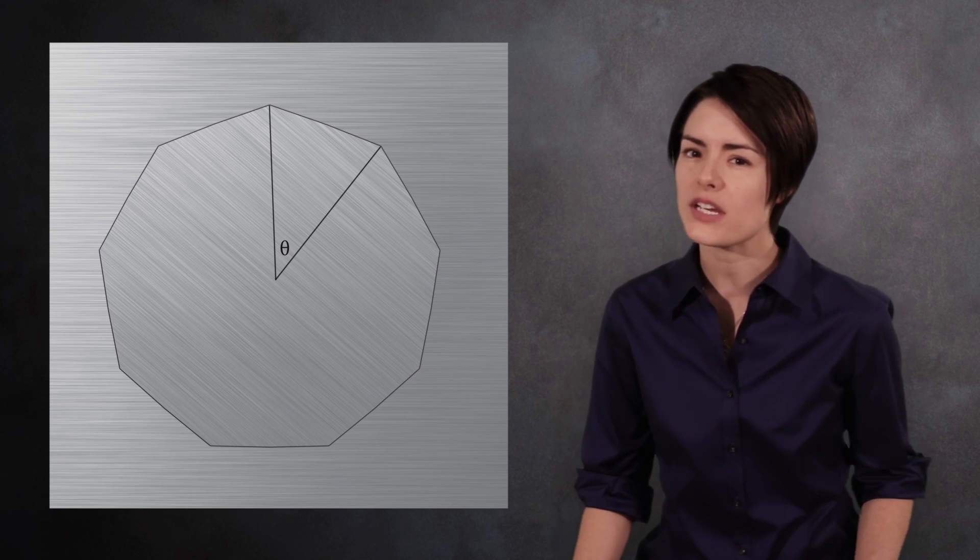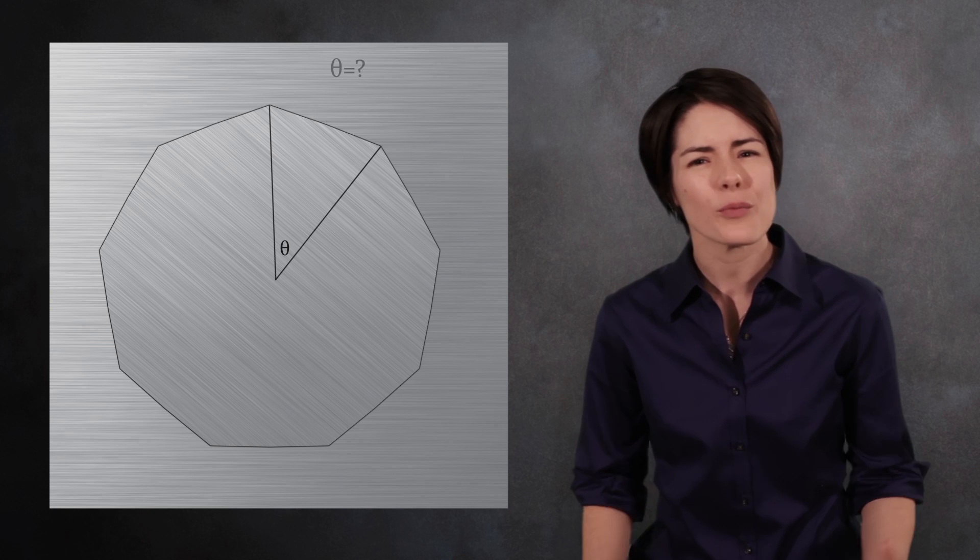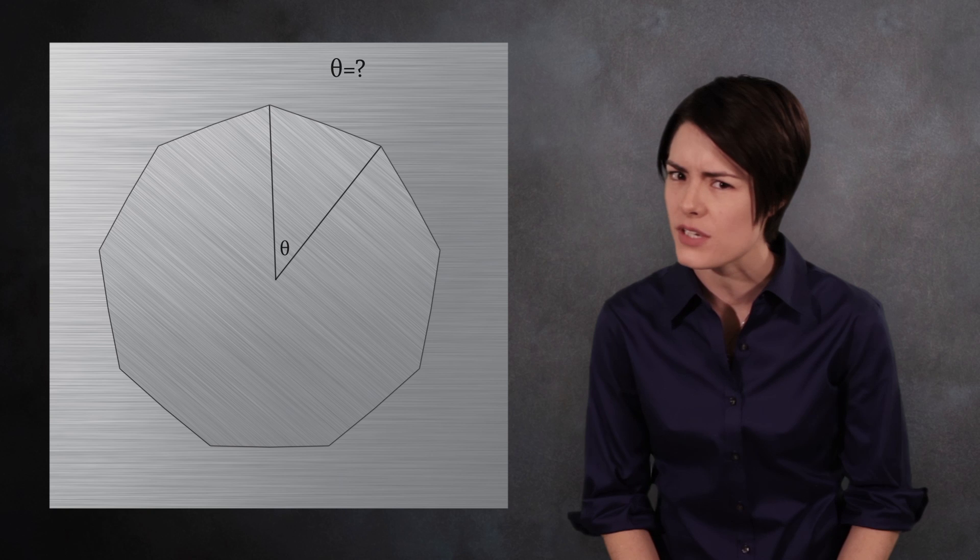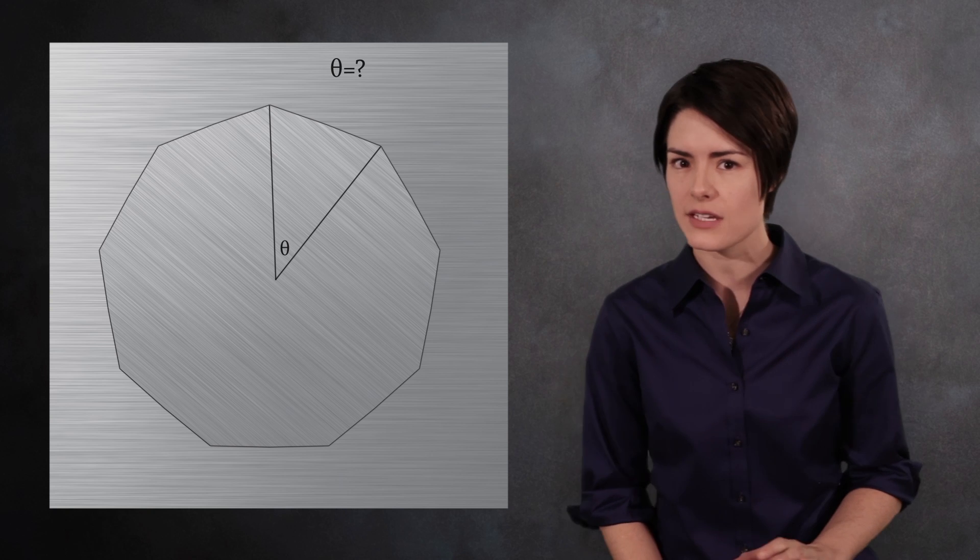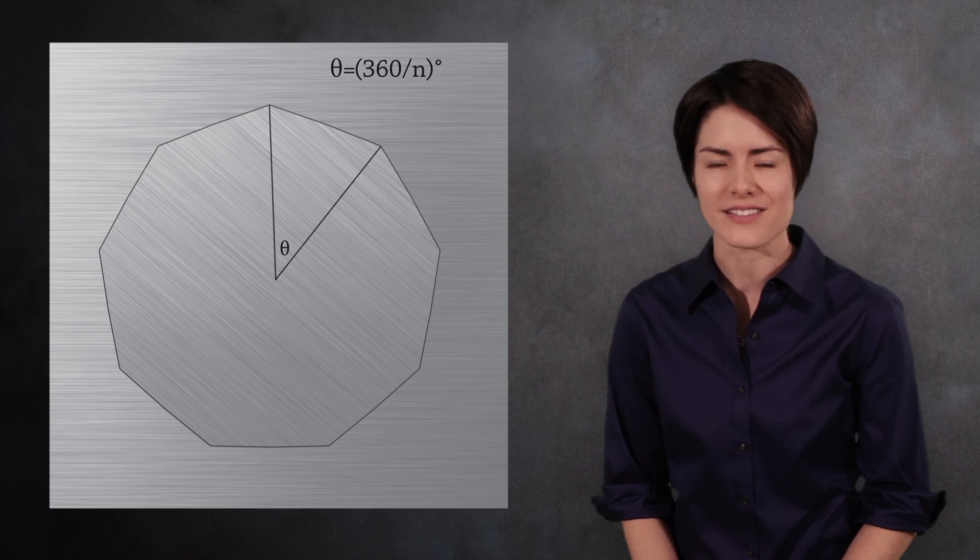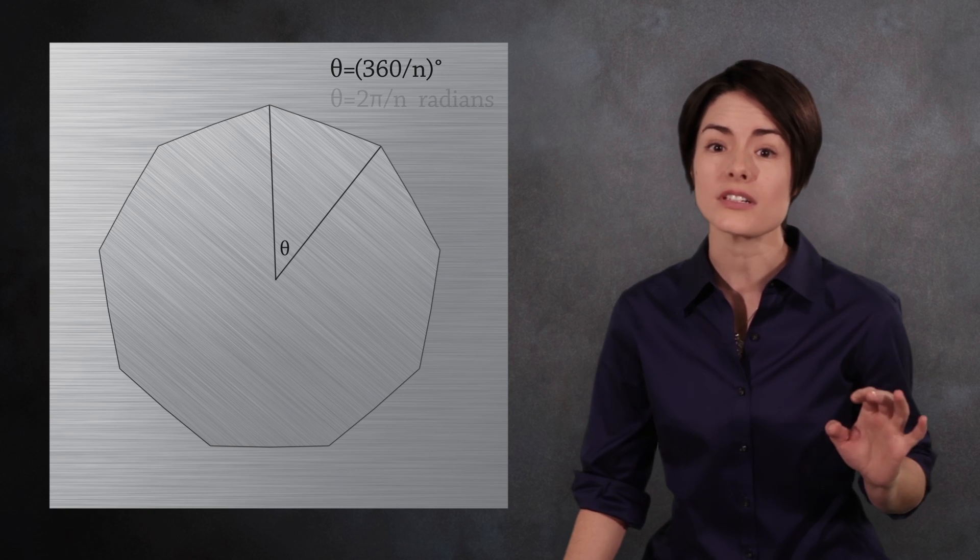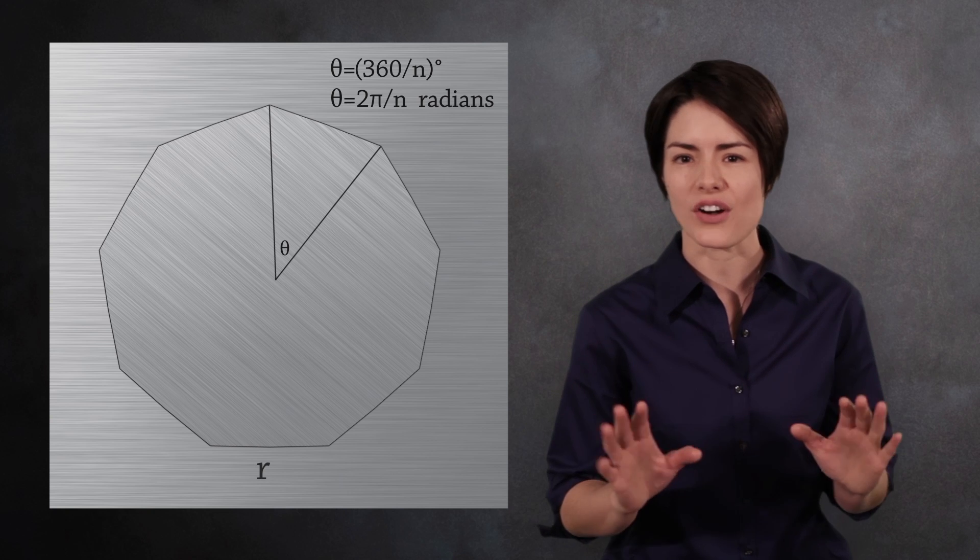One symmetry is a clockwise rotation, not a complete turn, but just enough of a rotation so the polygon looks the same as the initial position. Since it would take n rotations to make a complete 360 degree turn, the size of the rotation is 360 over n degrees, or if you prefer, 2 pi over n radians. Let's call this rotation symmetry r.